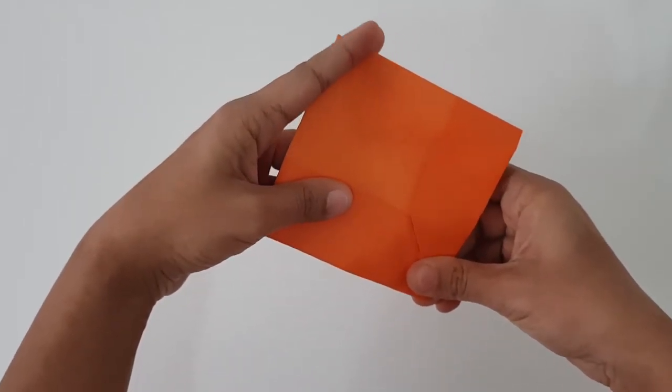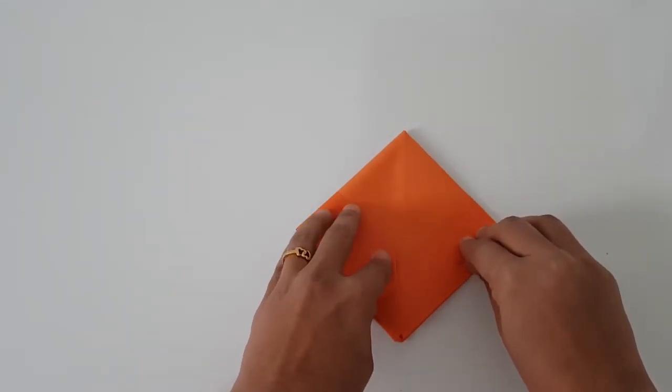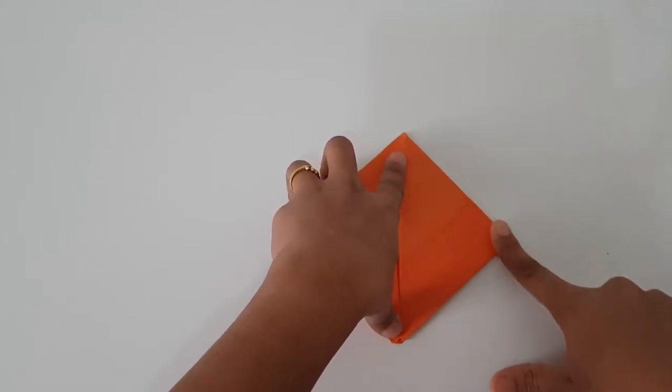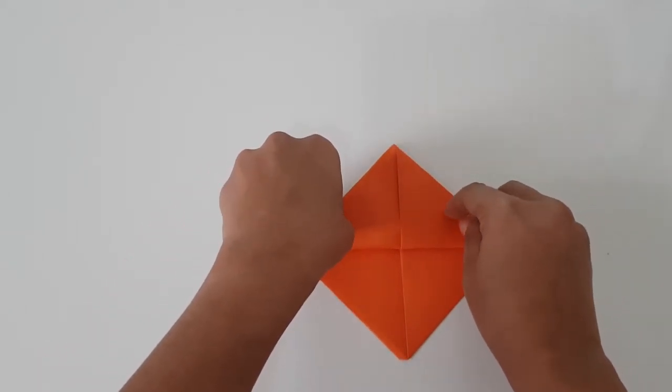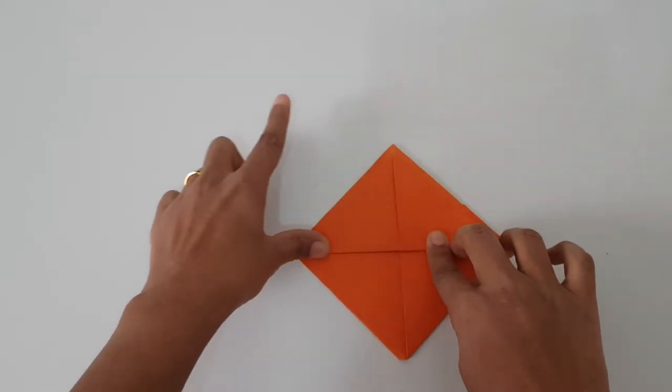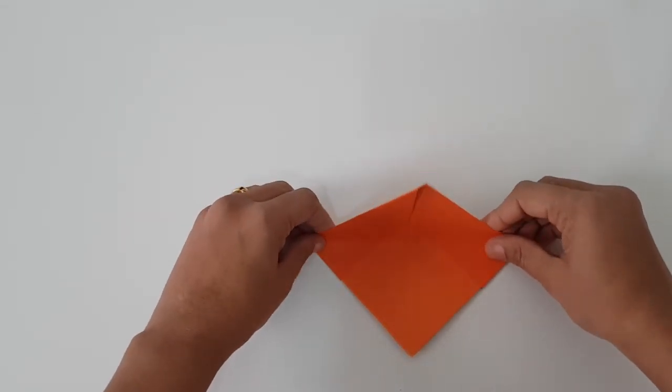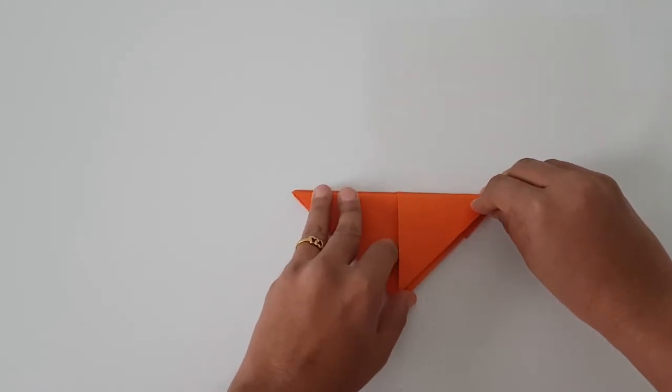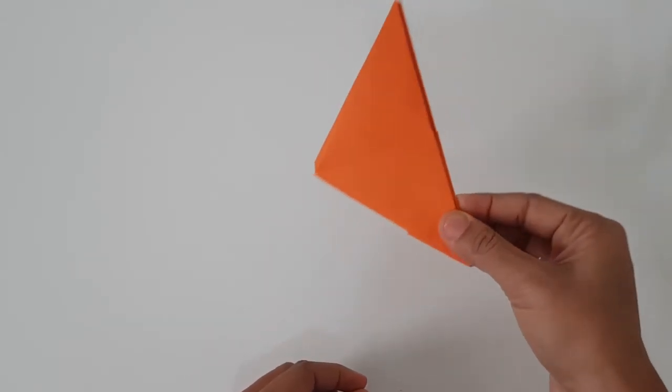So here I get a square. Let's press it from all the sides to make it firm. Now I'm going to fold this part upwards like this. And this side here like this.